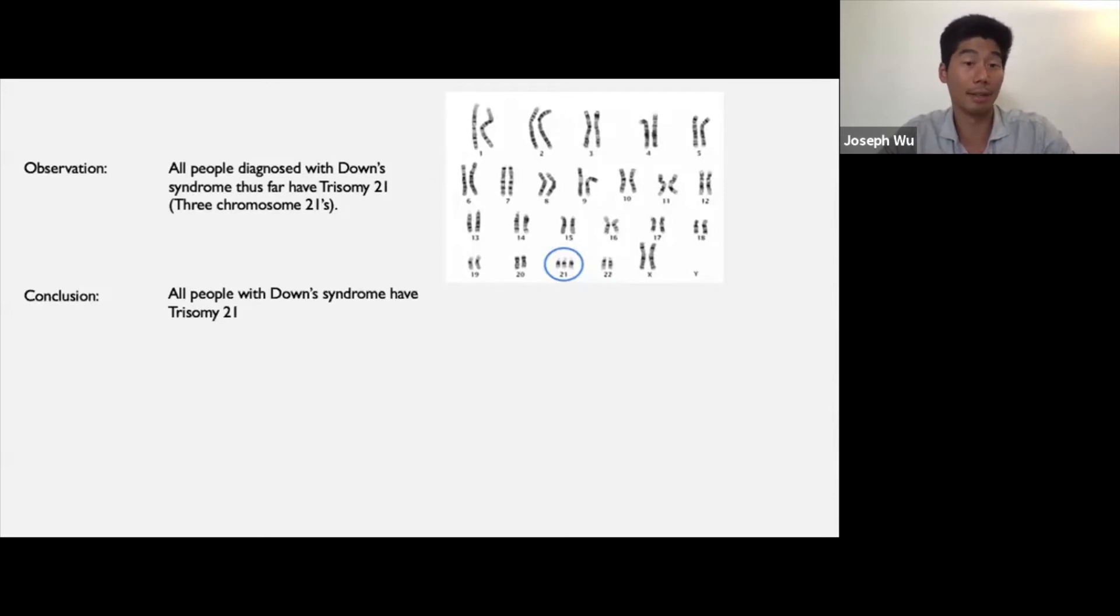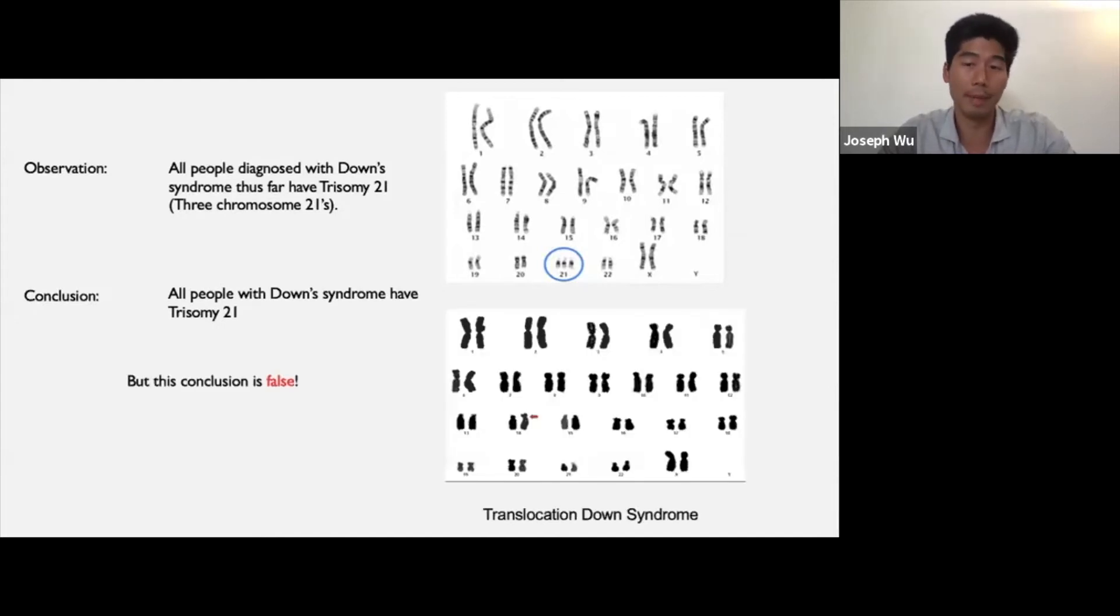However, because this is an inductive inference, it is possible that this conclusion is false. And in fact, it turns out to be false. A small proportion of people with Down syndrome have what's called translocation Down syndrome, where they only have two chromosome 21, but there's an extra piece of chromosome attached to another one. In this case, there's an extra piece indicated by the red arrow attached to chromosome 14. So stepping back, this is an inductive inference in which we moved from a sample, namely people with Down syndrome observed thus far, to draw a conclusion about a population, namely all people with Down syndrome.